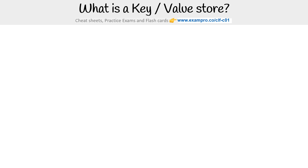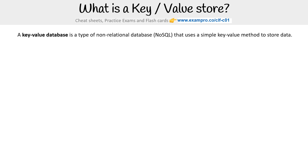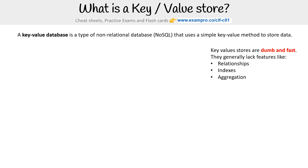Hey, this is Andrew Brown from Exam Pro, and we're taking a look at a key-value store. A key-value store or database is a type of non-relational database, or NoSQL, that uses a simple key-value method to store data. Key-value stores are dumb and fast, but they generally lack features like relationships, indexes, and aggregation.